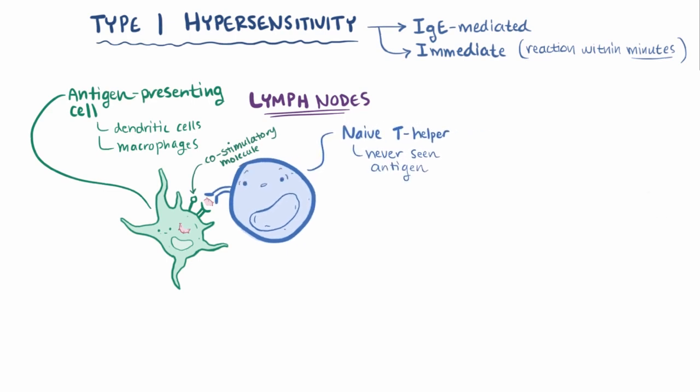When that T helper cell gets its hands on the antigen and also binds the co-stimulatory molecule, it's now been primed, and the naive T helper cell changes into a different sort of T helper cell.